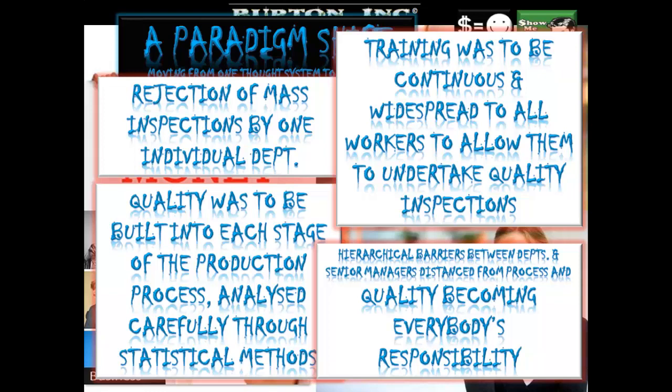If a production worker spots a flaw, sees something going wrong, knows that the final product will not meet high standards of quality assurance, then there is no problem at all with that worker going up further, crossing the hierarchical barriers between departments, and letting those higher up in the hierarchy know that something is wrong. Quality is becoming everybody's responsibility.